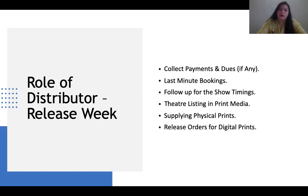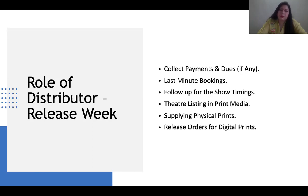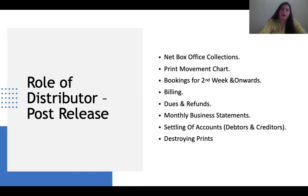The distributor also ensures that theater listings are available in print media — we often see film information in newspapers and on platforms like BookMyShow. He makes sure theater listings are present in print, electronic, and digital media. Supplying physical prints was the distributor's role during release week previously, but now everything is digital, so they ensure digital prints are available and release orders for digital prints.